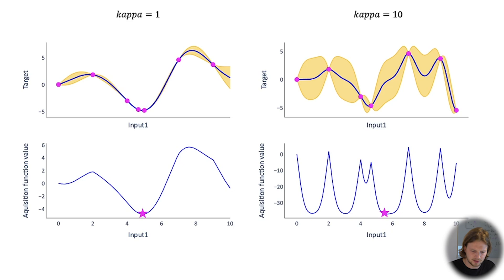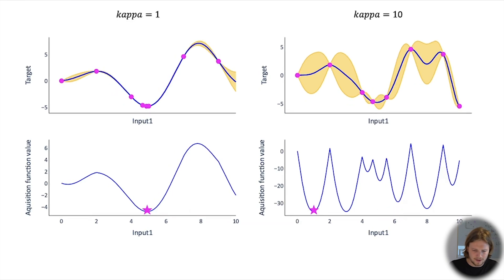And this process now is actually repeated iteratively, so it's done one more time, and as you see the best point that is found by kappa 1 is more or less between 4 and 6, and you see that the samples are getting very close to each other already, while with a kappa of 10 we still try to go in a wide variety, so now the next sample point would be between 0 and 2.